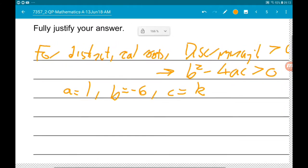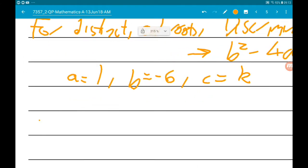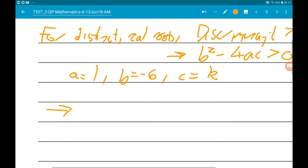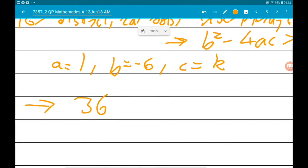Therefore, we know then that minus 6 squared, which is 36, minus 4 times 1 times k, so minus 4k is greater than 0.